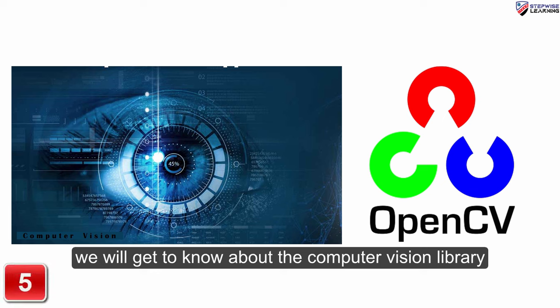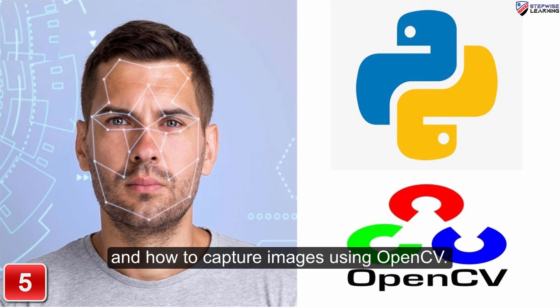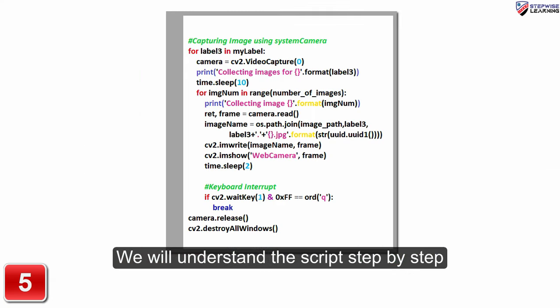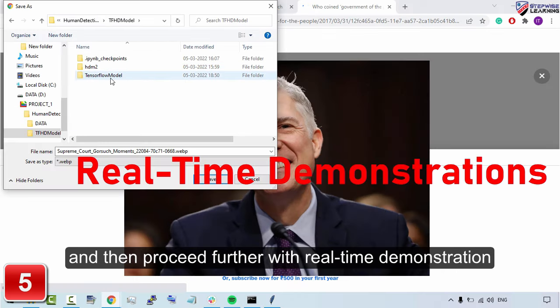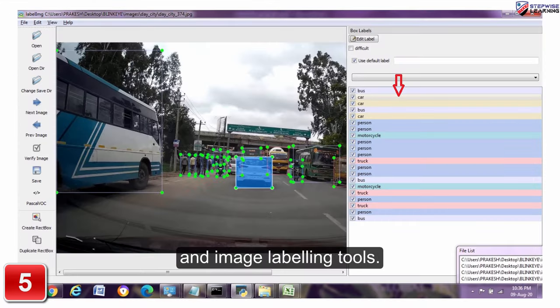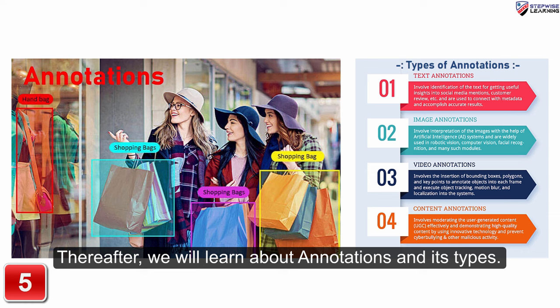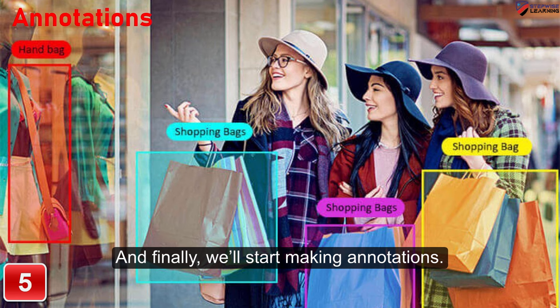In the fifth section, we will get to know about the Computer Vision Library and how to capture images using OpenCV. We will understand the script step by step and then proceed further with real-time demonstration and image labeling tools. Thereafter, we will learn about annotations and its types, and finally we will start making annotations.